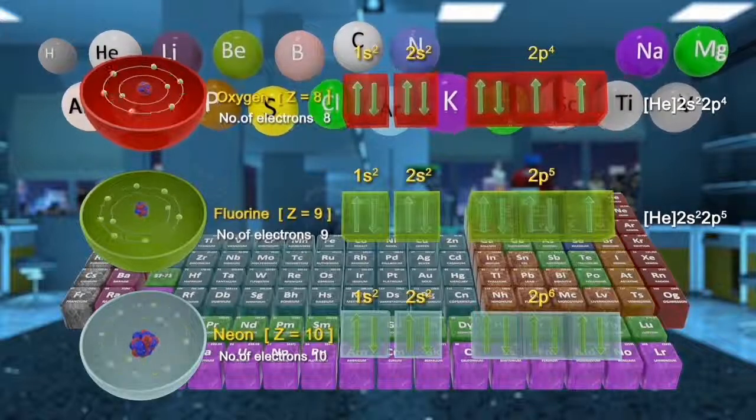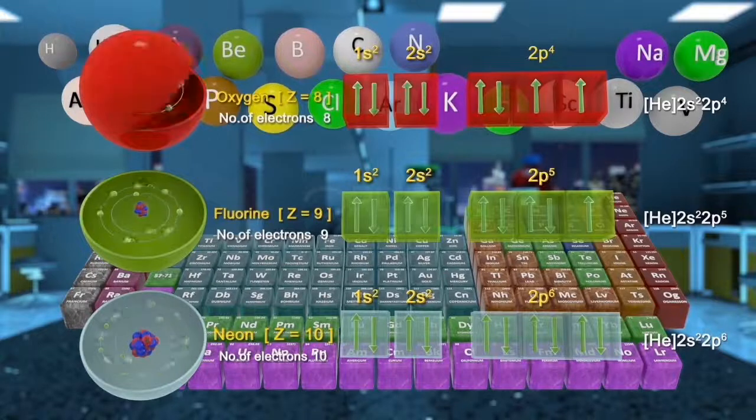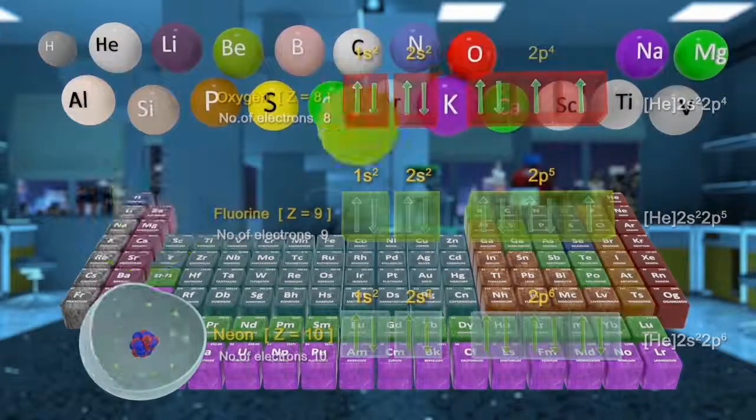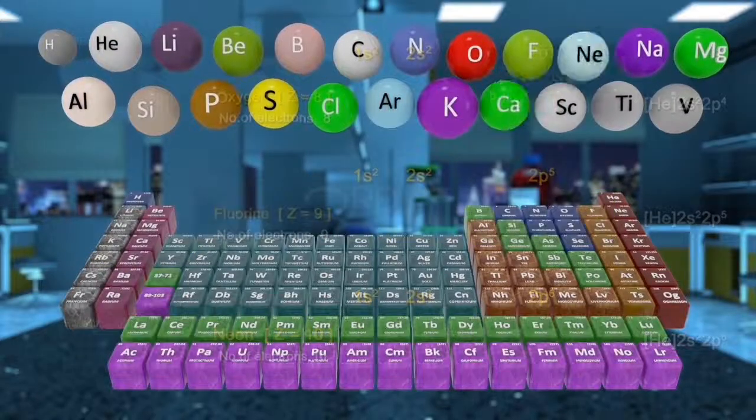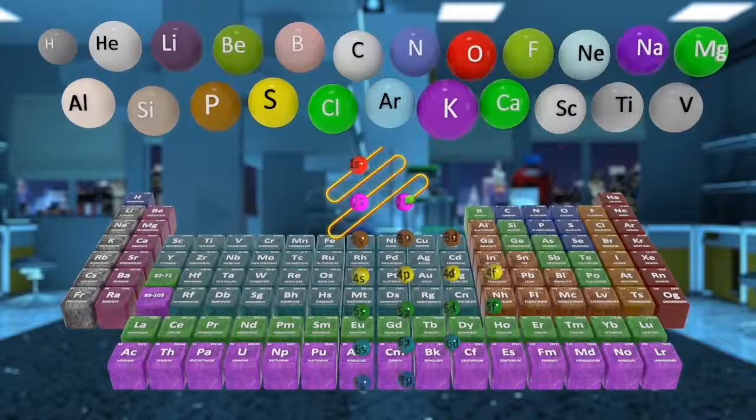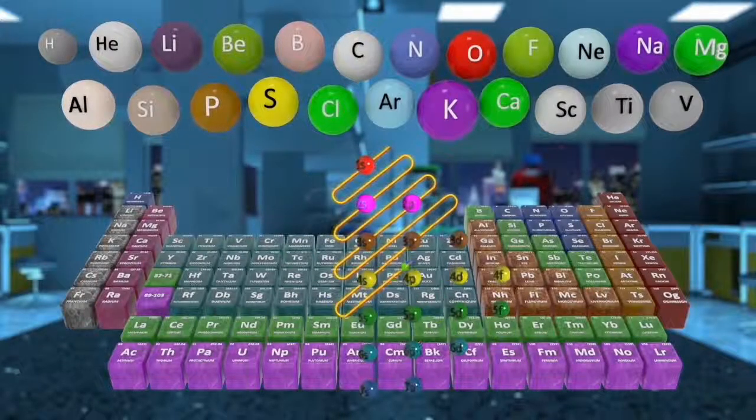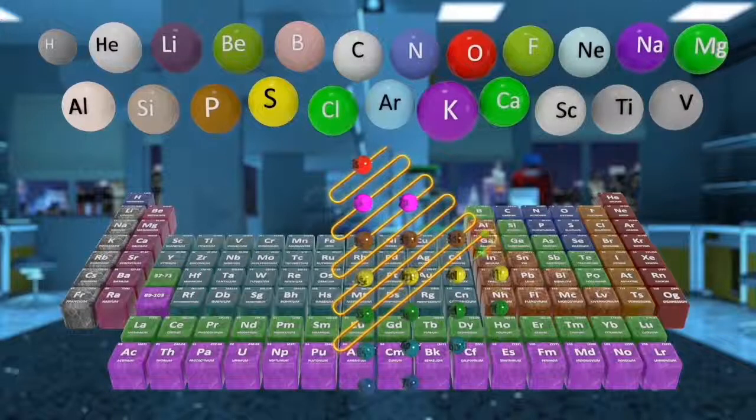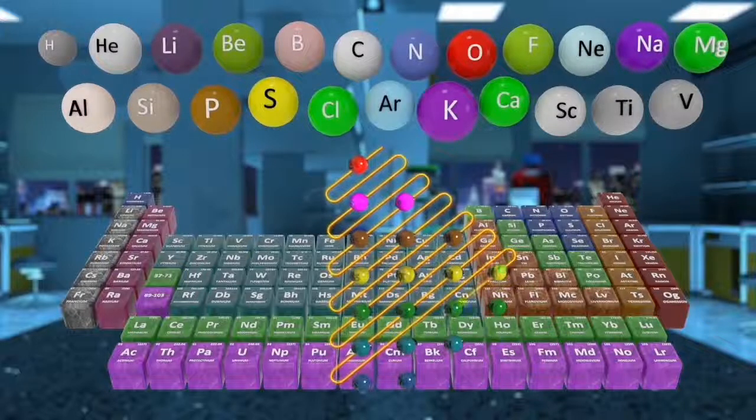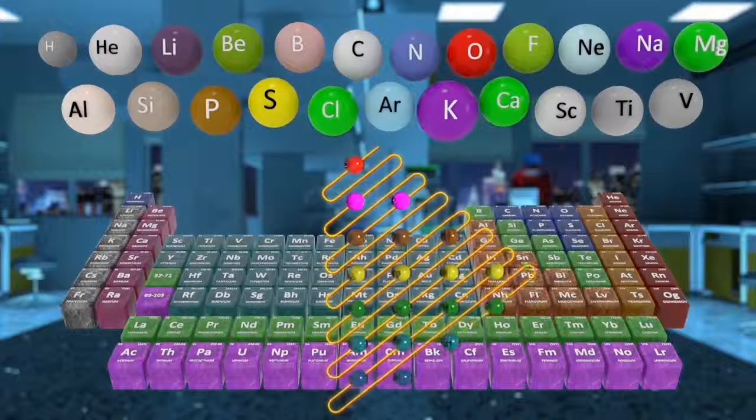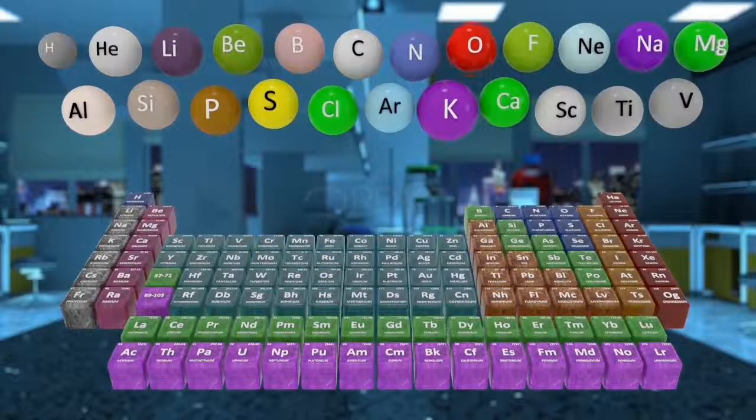Using the same method, we can write the electronic configuration of other elements. After filling the two p-orbitals, electrons fill the three s-orbitals and then the three p-orbitals. Let us witness these configurations.